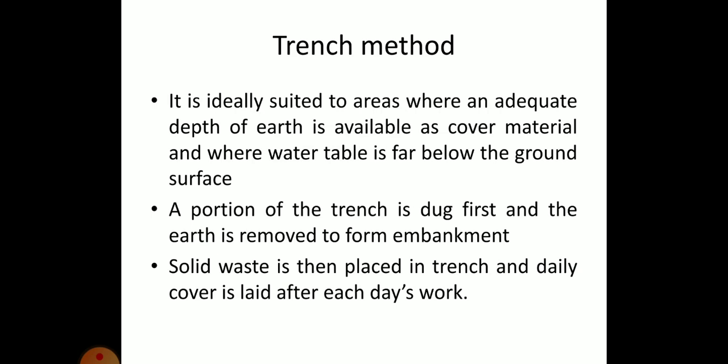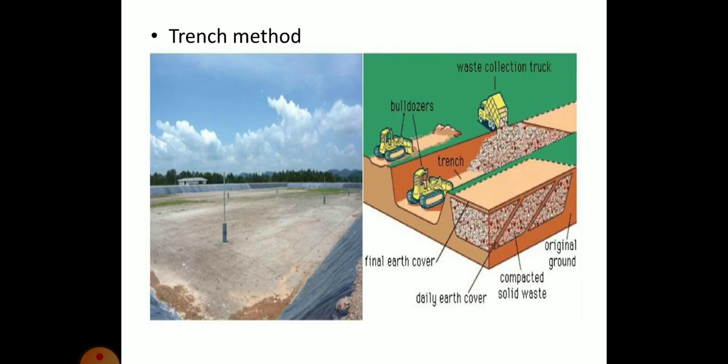The second type is the trench method. It is ideally suited to areas where an adequate depth of earth is available as cover material and when the water table is far below the ground surface. A portion of the trench is dug first and the earth is removed to form an embankment. The solid waste is then placed in the trench and a daily cover is laid after each day's work. Trenches are excavated at a suitable depth, waste is filled in and compacted by means of a bulldozer, and after each day's work a daily earth cover is laid.